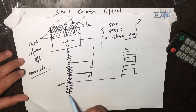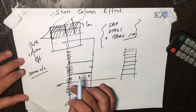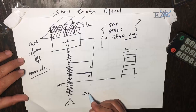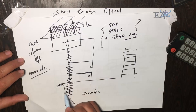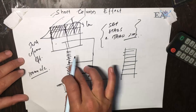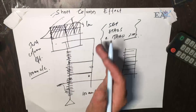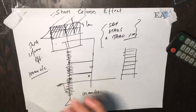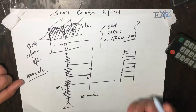Sometimes the designer requires these stirrups or rings to be placed at 100 mm center-to-center inside the soil as well. If we do this, then even if there is a short column effect, there won't be any significant effect when an earthquake or lateral load acts on that column.